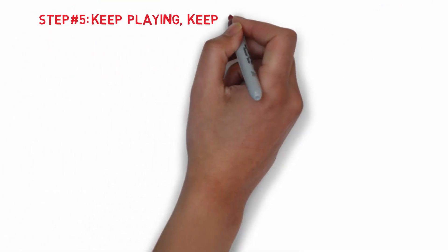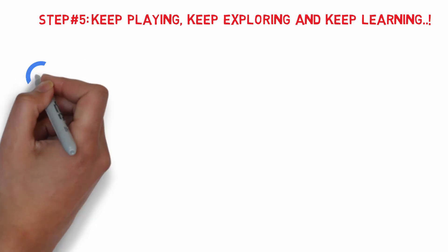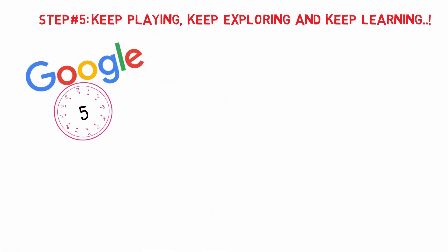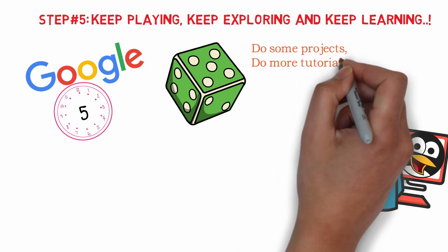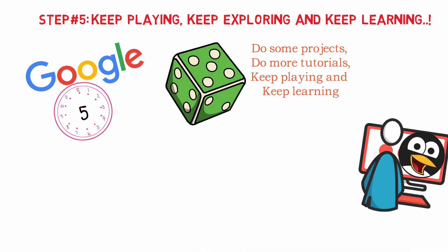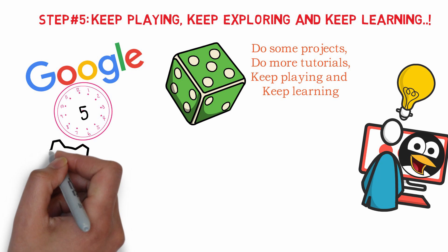Step number five: keep playing, keep exploring, and keep learning. You should have now reached a level where you don't need to Google every five minutes to figure something out and you have become a more independent user of Linux. At this point, do whatever you feel is fun — do some projects, do more tutorials, keep playing and keep learning. Make sure you don't always follow online tutorials. I recommend taking some ideas online and, without looking at a solution, do some research and try to reproduce the same solution yourself. If you get stuck, you can always go back to the solution and find how the original developer implemented it.